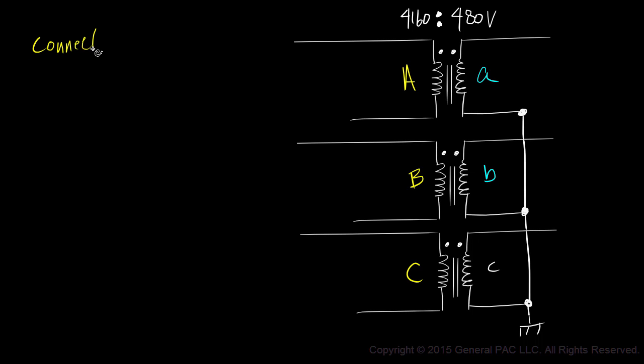Now we'll connect our primary windings in delta. There are many ways to connect a transformer in delta and each connection gives us a unique characteristic.